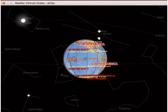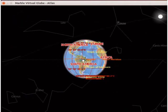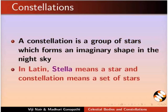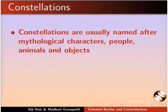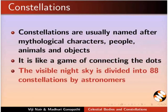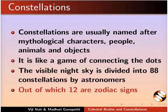We can see some lines and shapes in the sky — they are constellations. A constellation is a group of stars which forms an imaginary shape in the night sky. In Latin, stella means a star and constellation means a set of stars. Constellations are usually named after mythological characters, people, animals and objects. It is like a game of connecting the dots. The visible night sky is divided into 88 constellations by astronomers, out of which 12 are zodiac signs.